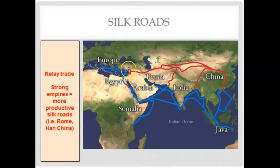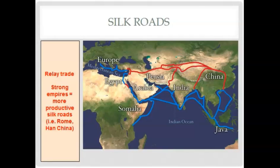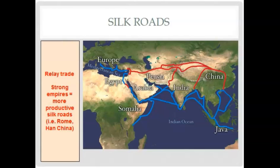Looking at the Silk Road map, China is connected all the way to Western Europe. The role of relay trade is important: someone isn't going to travel the entire length of the Silk Roads — they'll go to the next station or city, trade their goods, make a profit, and return home. The Silk Roads ebb and flow with empires; they were strongest when you had strong empires at their ends, like Rome and Han China at their heights. Later, the Mongols helped, and in fact the Silk Roads were probably most prosperous and safest during Mongol rule.